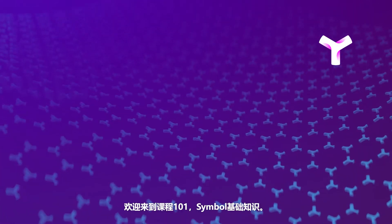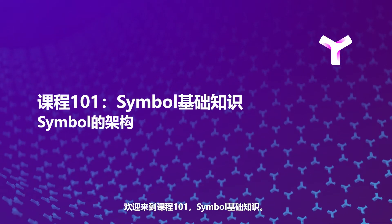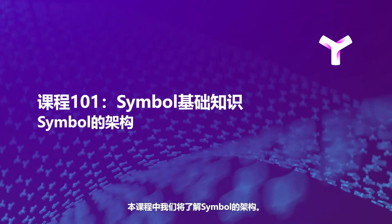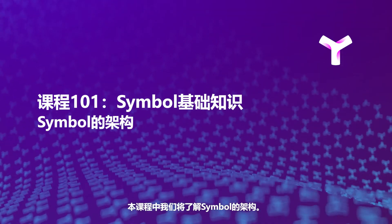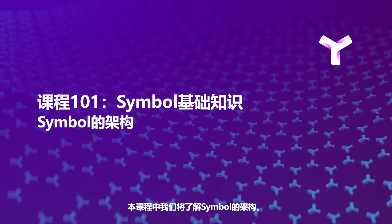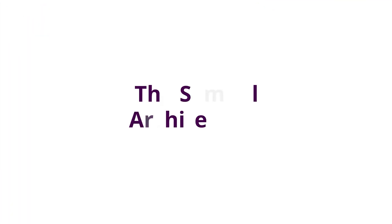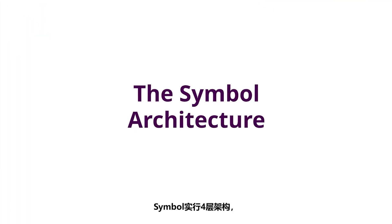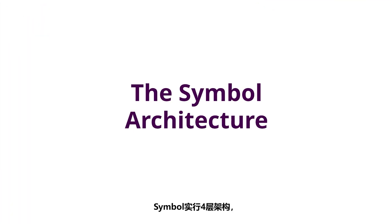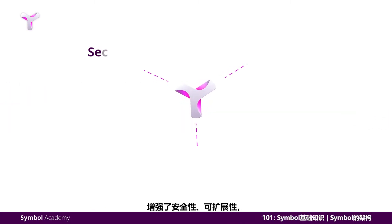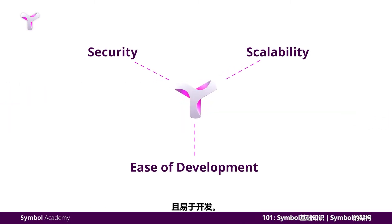Welcome back to course 101, Symbol Fundamentals. In this course, we'll take a look into Symbol Architecture. Symbol implements a four-tiered architecture design for added security, scalability, and ease of development.